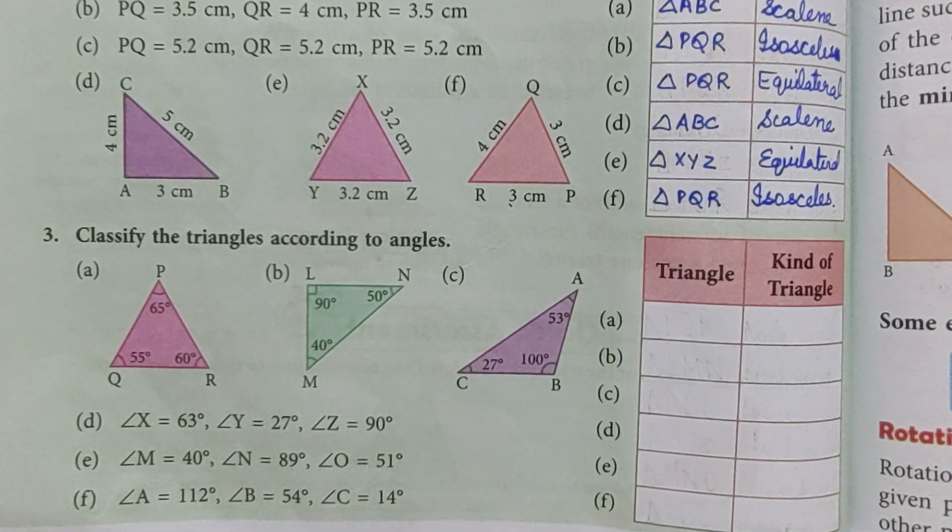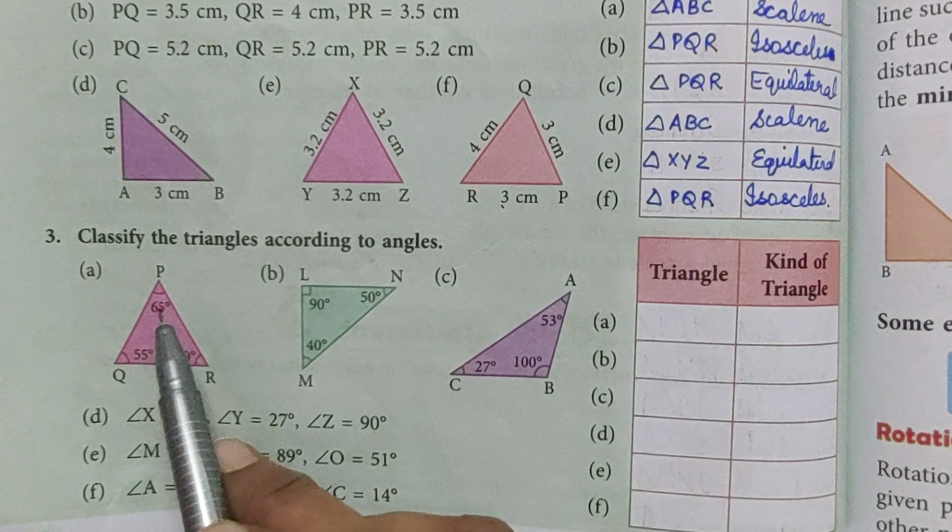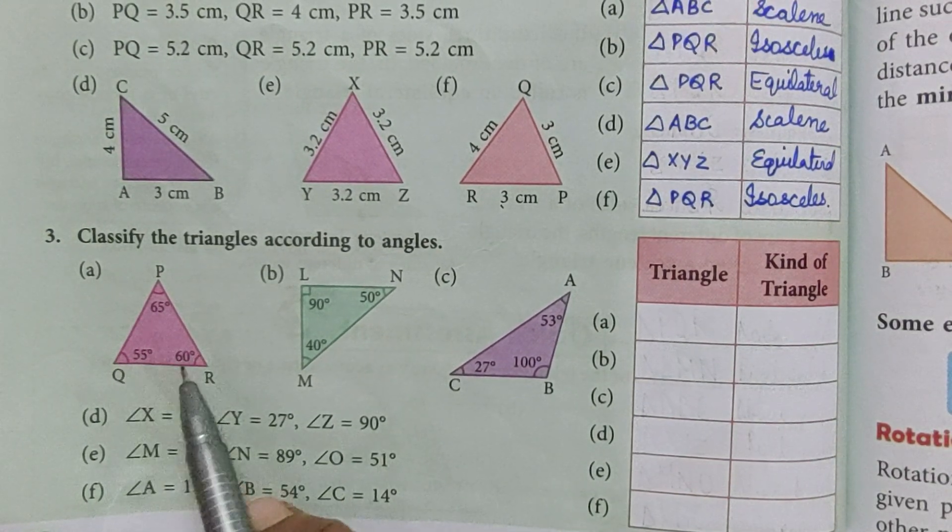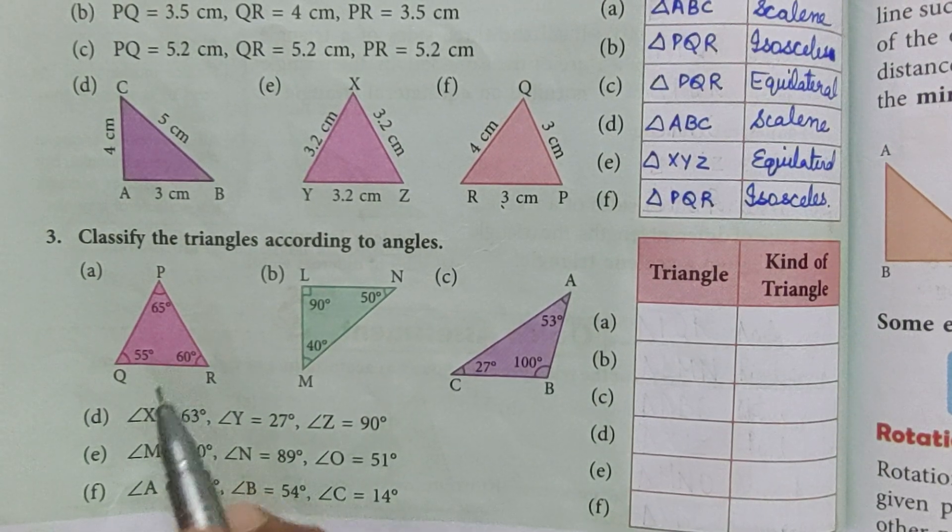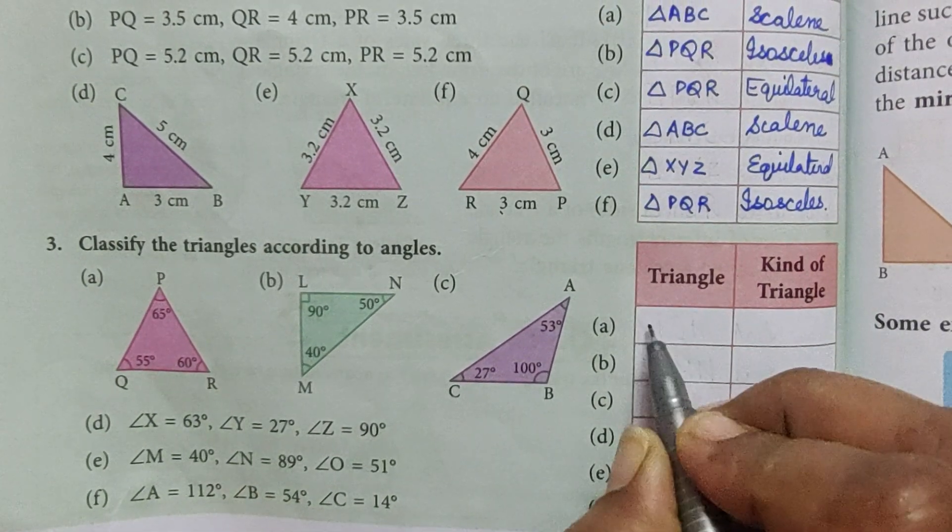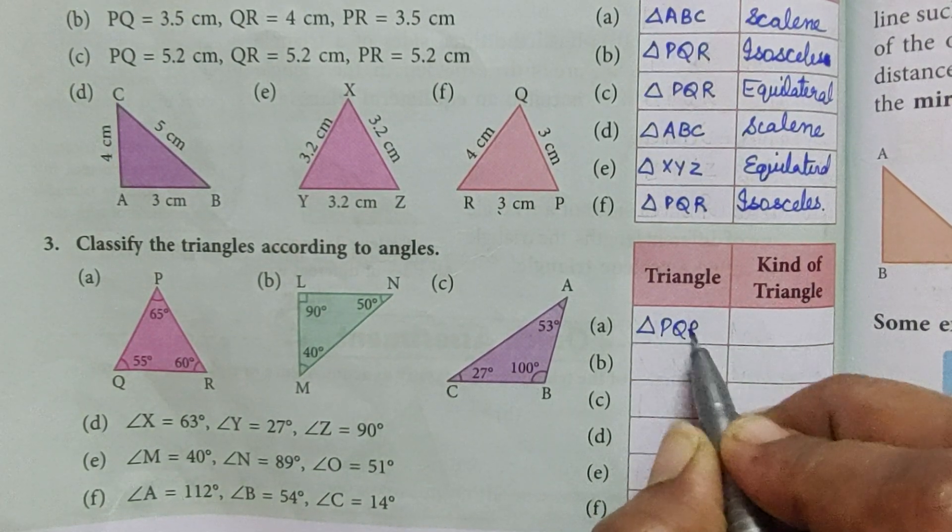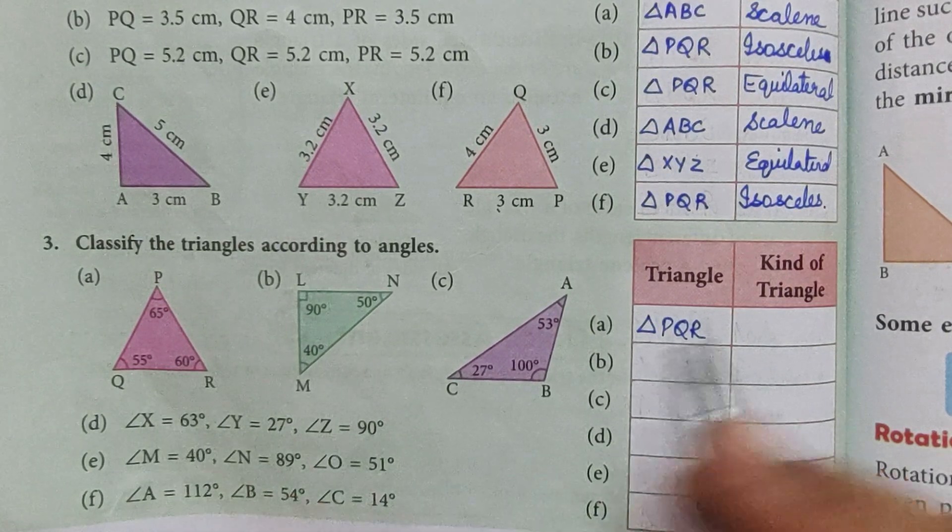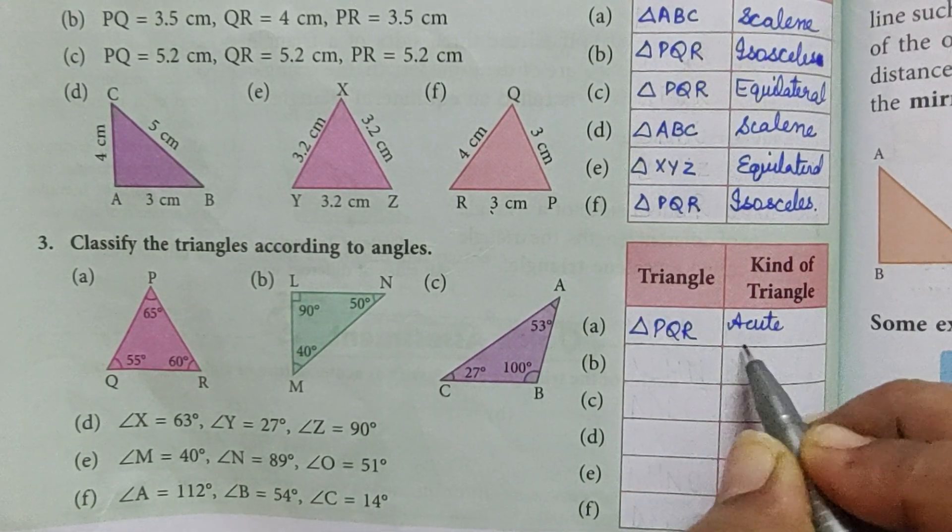First one, all the angles are acute, so it is an acute angle triangle. First we will write the name of triangle, triangle PQR, and kind of triangle is acute angled.